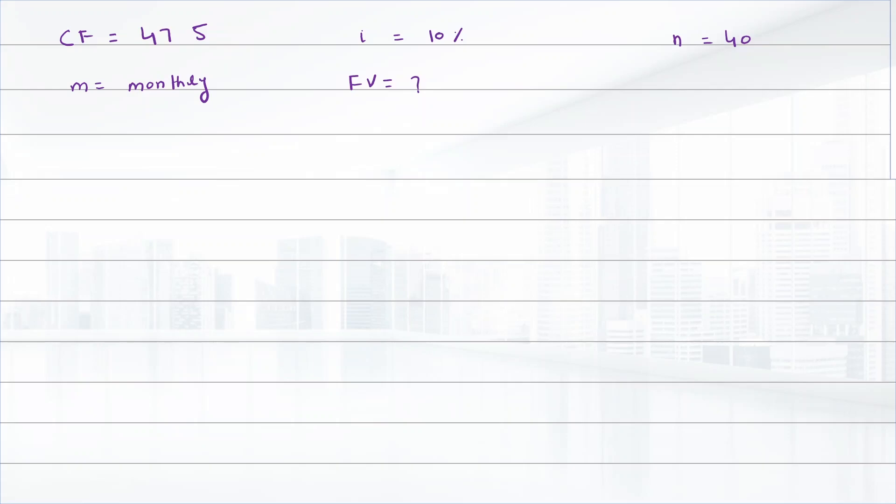In this question, the cash flow is in monthly form. So we will convert interest as well as N number of years into monthly form. I will be divided by 12, that is 0.0083, and for N we will multiply it by 12, that is 480.